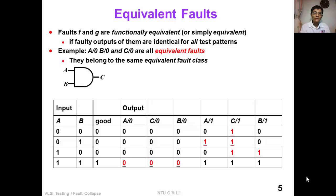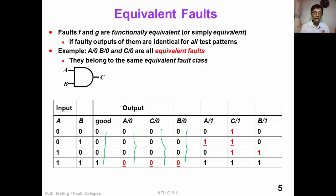Faults F and G are functionally equivalent, or simply equivalent, if the faulty circuits produce the same output for all test patterns. For this simple two-input AND gate, A stuck-at-0, B stuck-at-0, and C stuck-at-0 faults are all equivalent faults — they belong to the same equivalent fault class, as shown in the table where the faulty outputs are all identical.